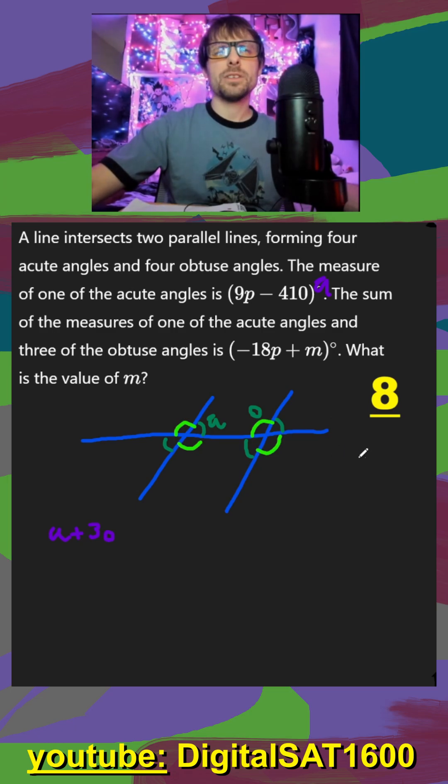Okay, so we're going to have to go through a few formulas here. The first one is remember that a line is always 180 degrees. So that would be one obtuse and one acute angle. So we can say that A plus O, that's going to be equal to 180 degrees.